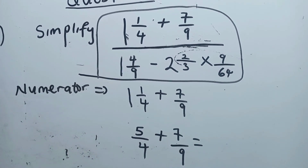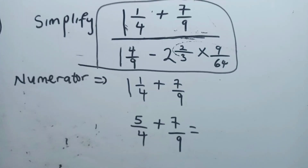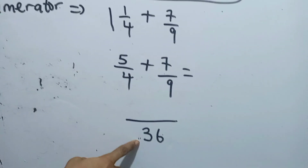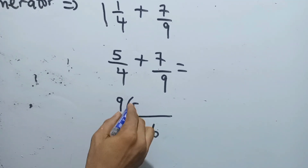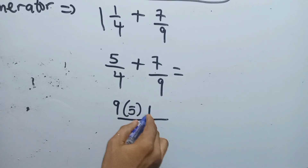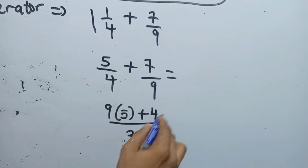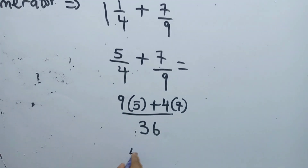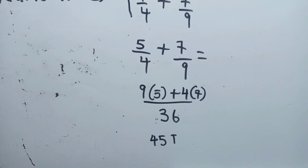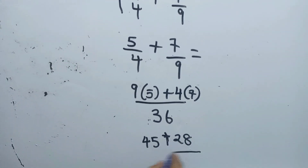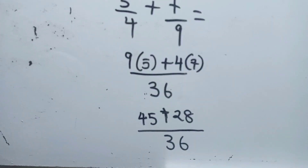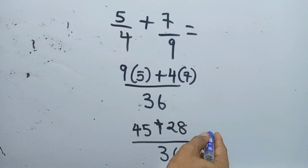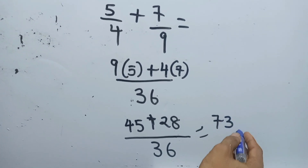I find the LCM of 4 and 9, which is 36. Four goes into 36 nine times, and 9 goes into 36 four times. So nine times 5 is 45, plus four times 7 is 28, over 36. Therefore 45 plus 28 equals 73, giving us 73 over 36 for the numerator.